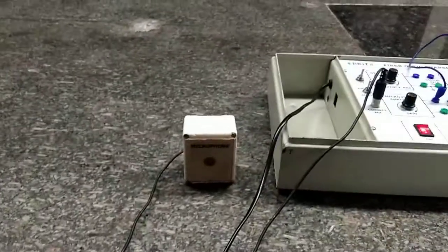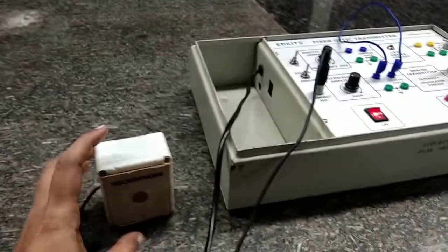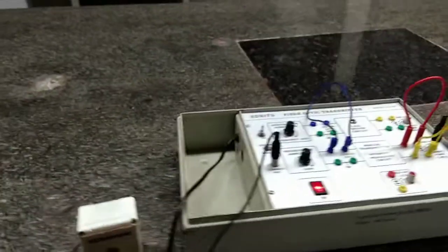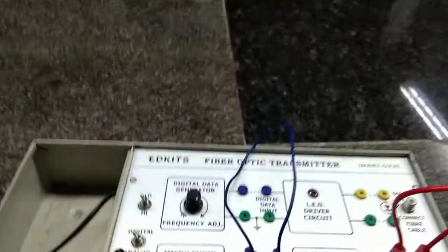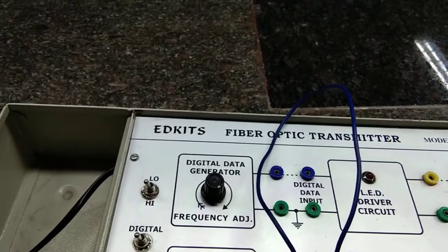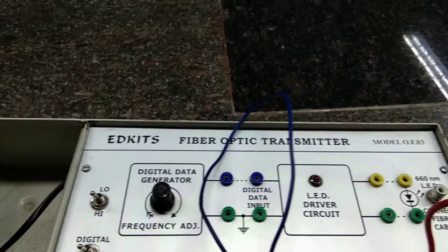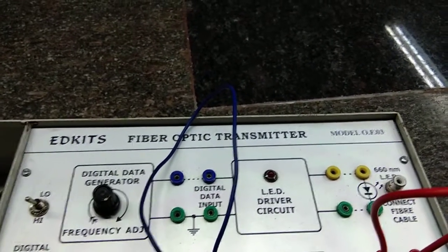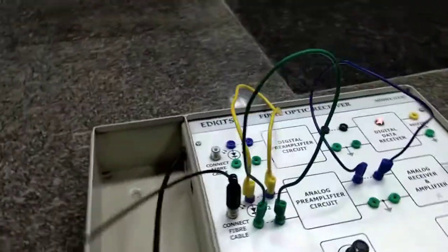So we have a microphone here. I can produce a sound here. This basically transmits through this digital data generator where the sound signal has got converted into electrical signal, and it reaches this LED driver circuit where this electrical signal would get converted into light signal. And the light is allowed to pass through this optical fiber and it reaches this receiver end.